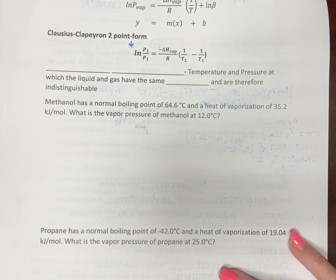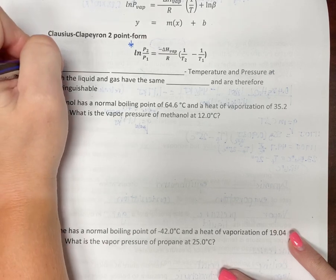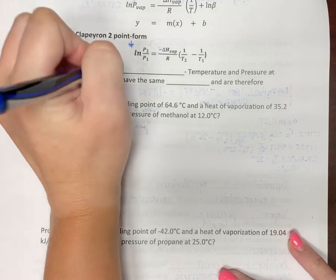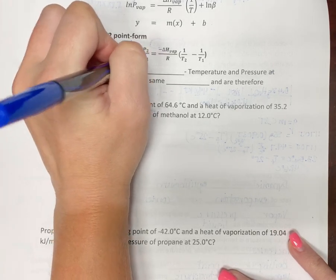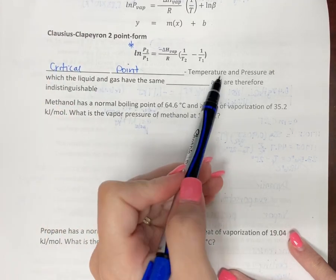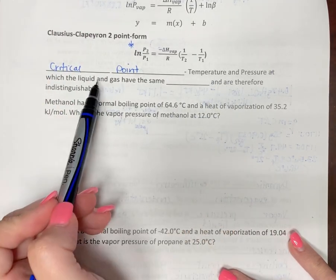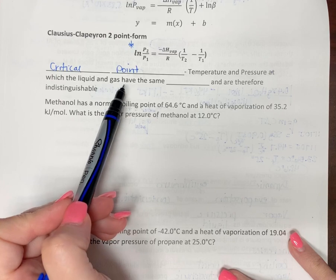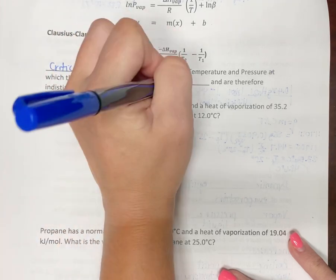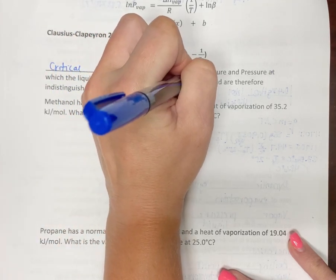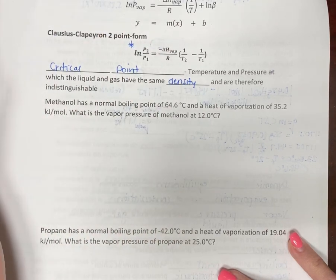We also need to talk about something that is called the critical point. So the critical point, this is a temperature and pressure where the liquid and the gas both have the same density. Normally a liquid is more dense than a gas.